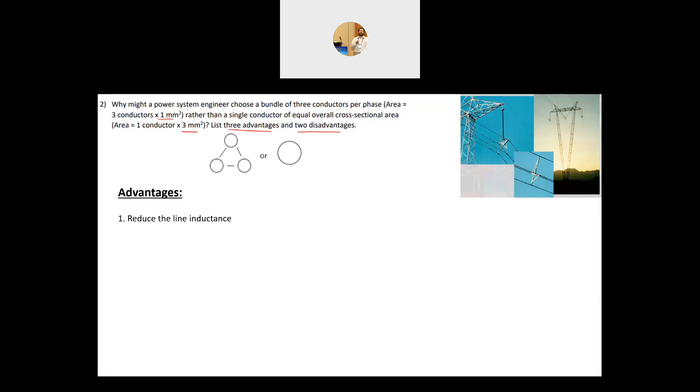You could have bundle of two, three, four and so on and so forth. So why we do that? Why instead of having everything as lumped as one conductor, we split them into multiple conductors?